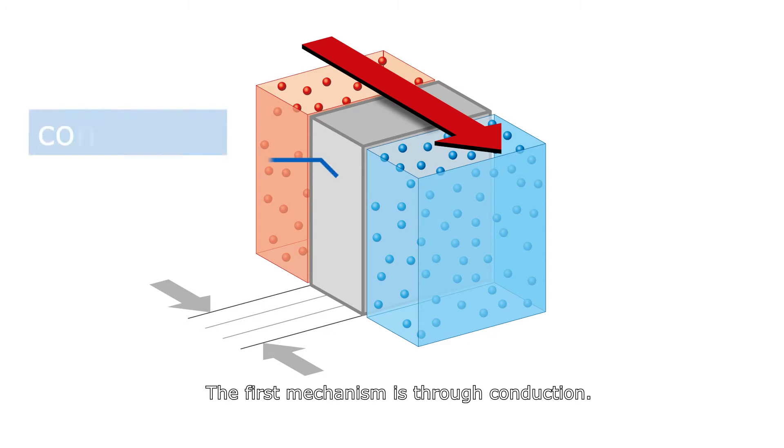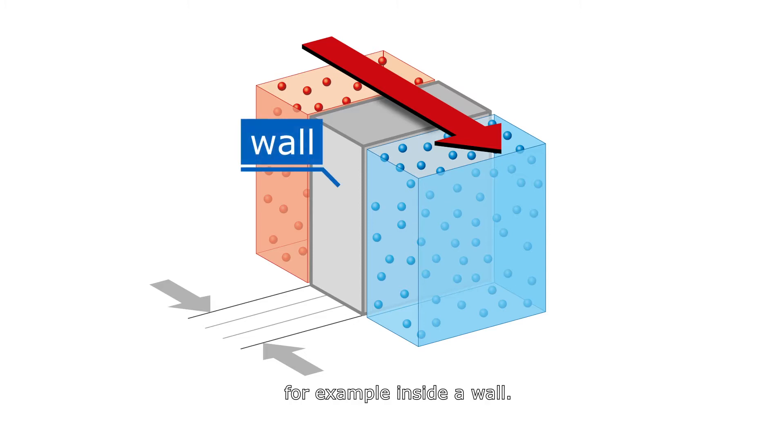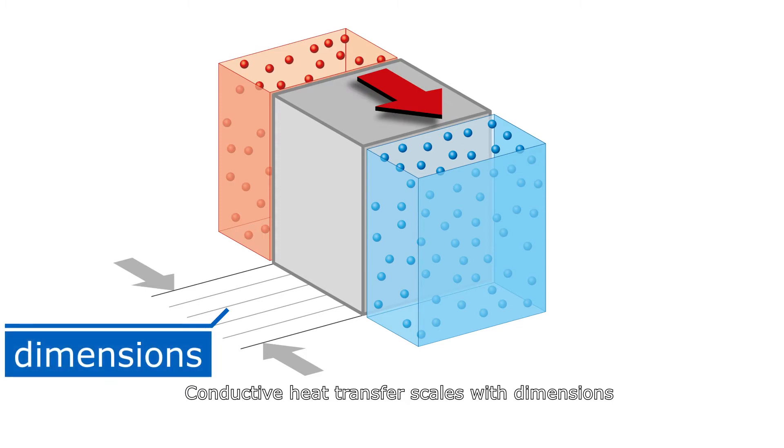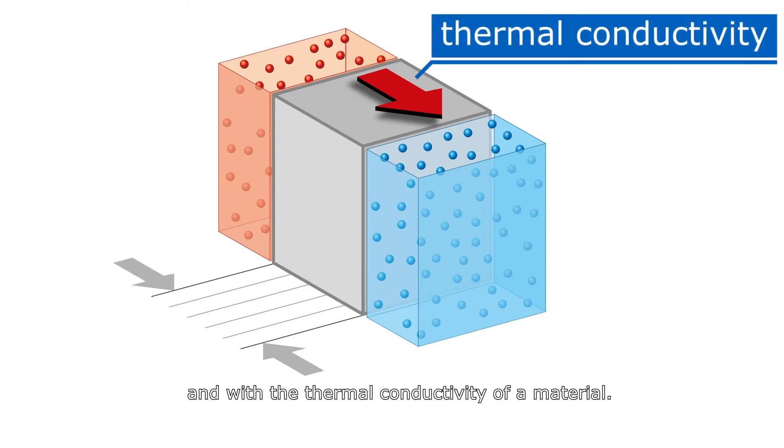The first mechanism is through conduction. Through a solid or stationary fluid, for example, inside a wall. Conductive heat transfer scales with dimensions and with the thermal conductivity of a material.